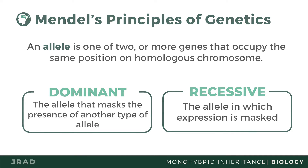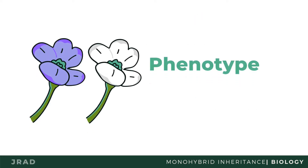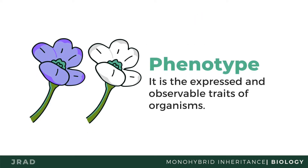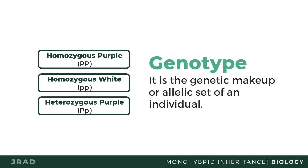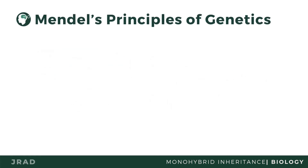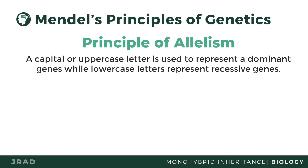The expressed or observable trait of an organism is called the phenotype, while its genetic makeup, or allele pair-up, is called the genotype. A capital or uppercase letter is used to represent a dominant gene, while lowercase letters represent recessive genes.